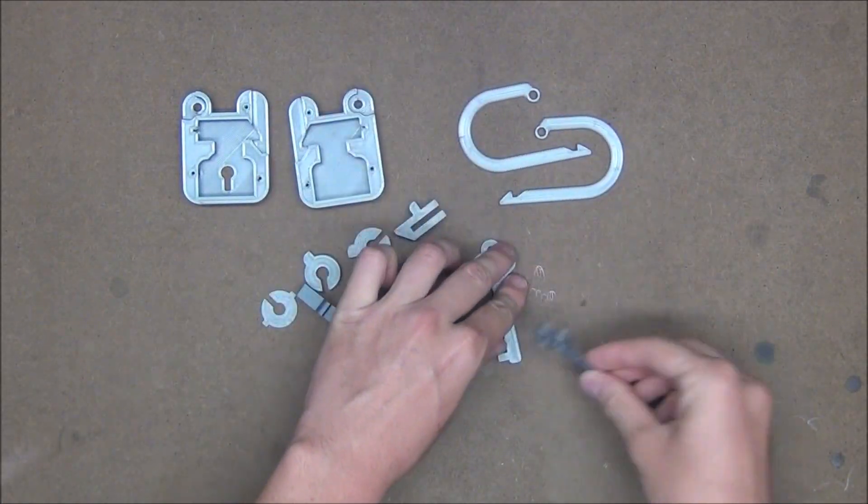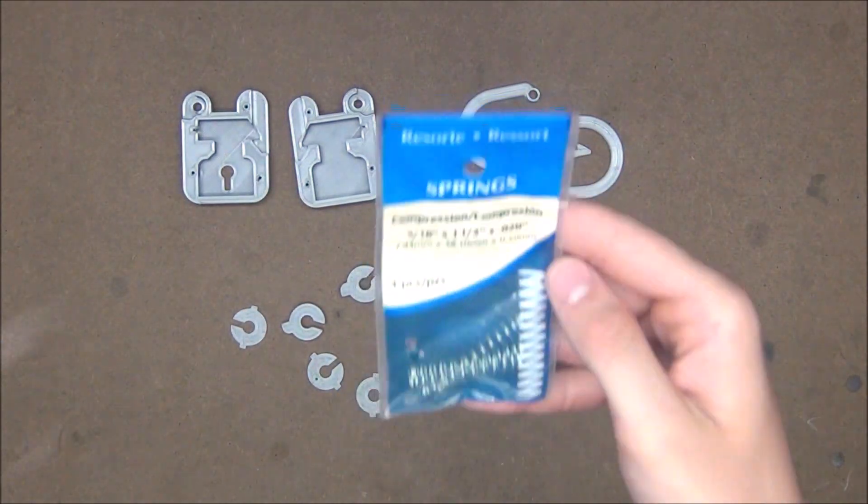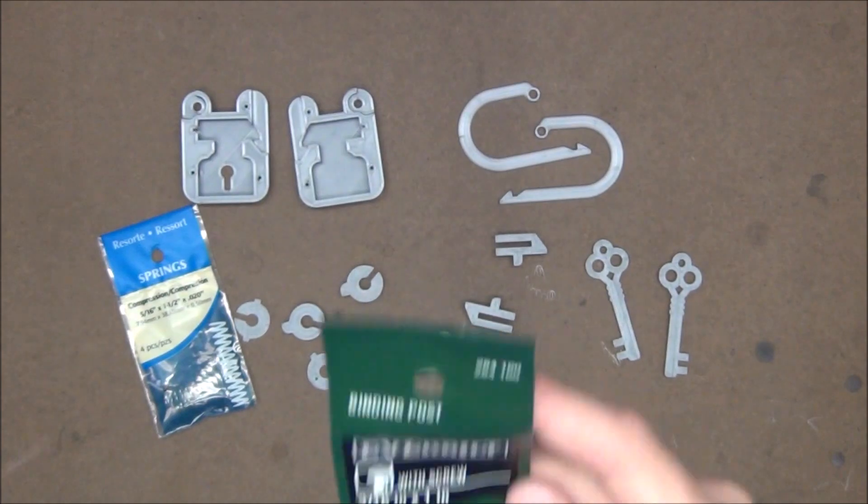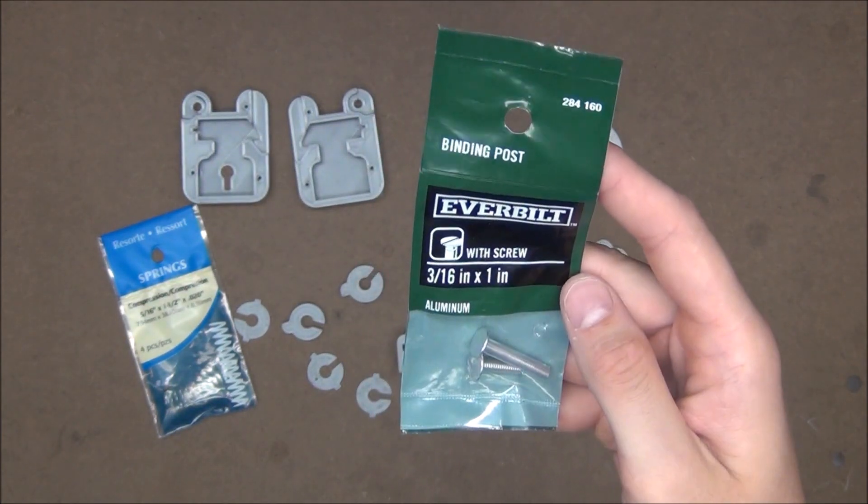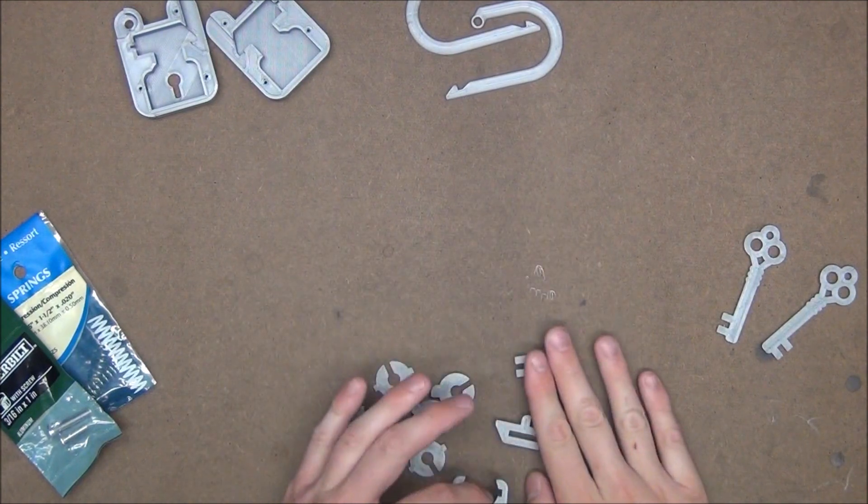But before we can get started putting all this together, we're going to need a few non-3D printed parts, namely two compression springs and one one-inch binding post. That's like an off-brand serial name. I don't know if that's what that's actually called.